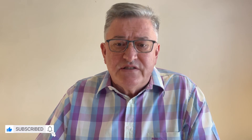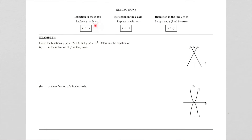Let's look at these reflections. We have the reflection in the x-axis — that is where we replace y with a negative y. We have reflection in the y-axis — that is when we replace x with a negative x. And then we have the reflection in the line y equal to x, and that is where we swap x and y.